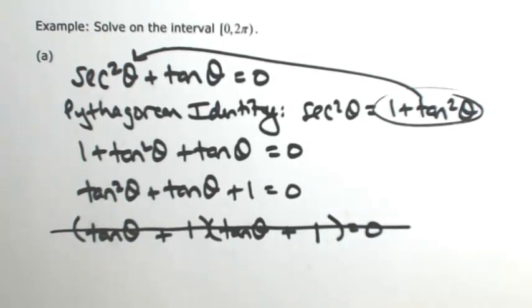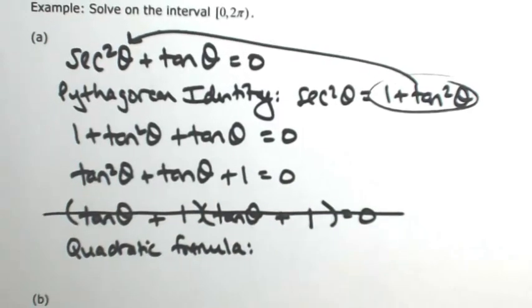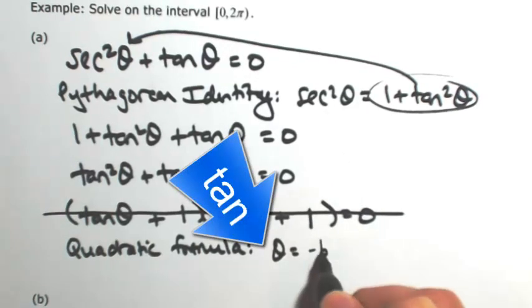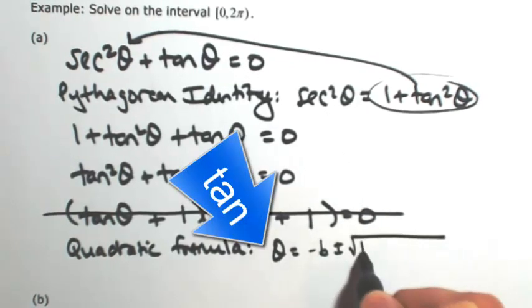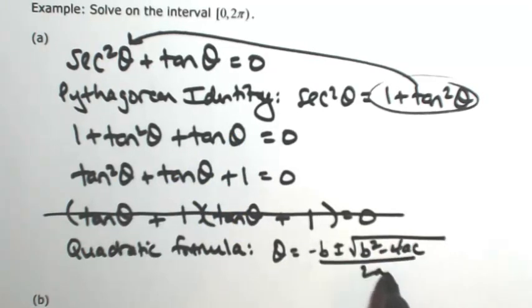So at this point, I'm going to go to the quadratic formula. That's another way to solve a quadratic. So I'm looking for what theta is. So theta is going to be, just in general, the opposite of b plus or minus square root of b squared minus 4ac all over 2a.